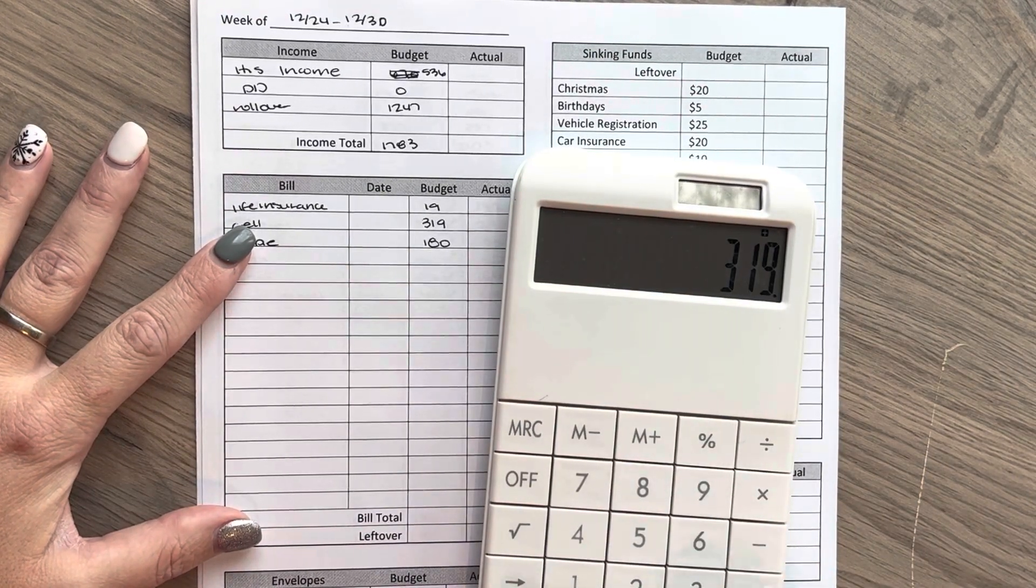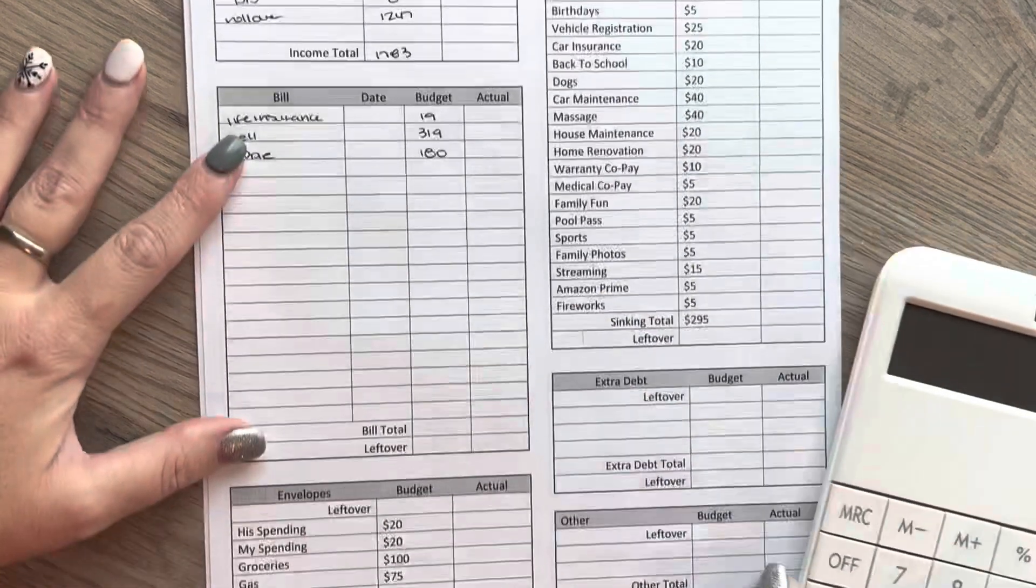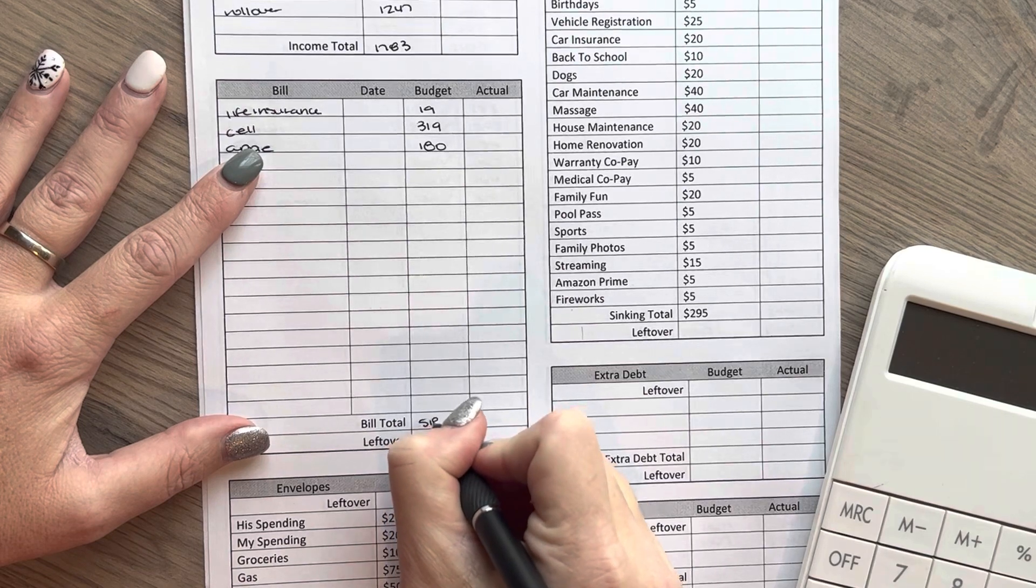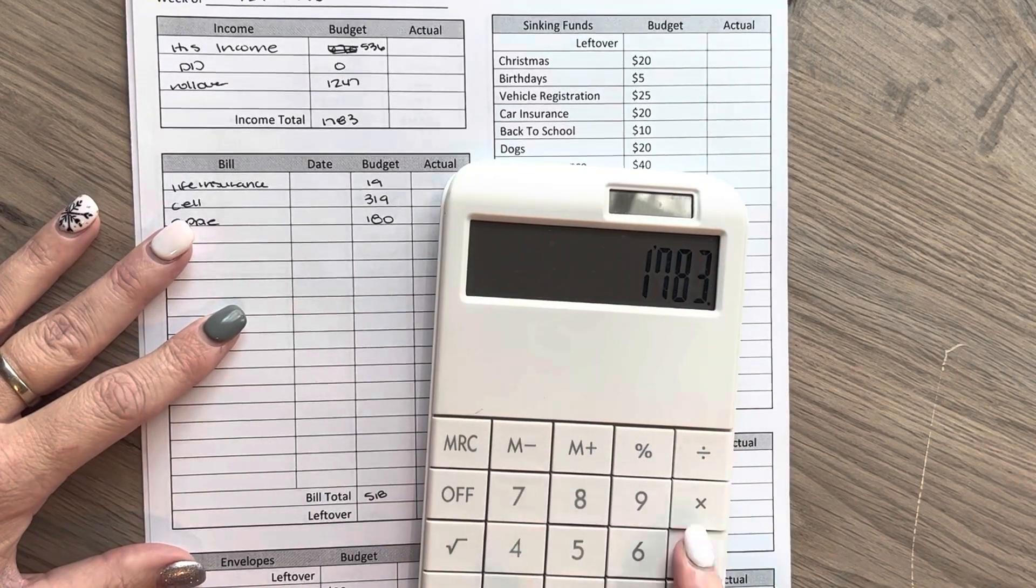And so we'll total these up. I don't have to do school lunches for the kids this week, because they are out of school until the beginning of January. So I'm not including that in this. So $1,783 minus the $518 in bills is $1265.